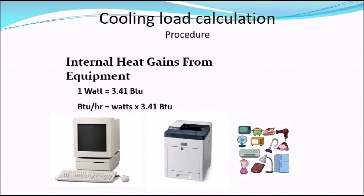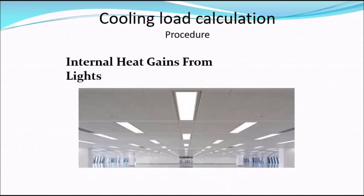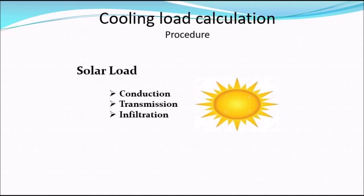The other source that generates heat within the building is lighting — how much lighting, what type of lighting, and how many watts — all of which should be accounted for in the cooling load. The last thing we need to calculate is the solar load. Solar load has three components: conduction, transmission, and infiltration.